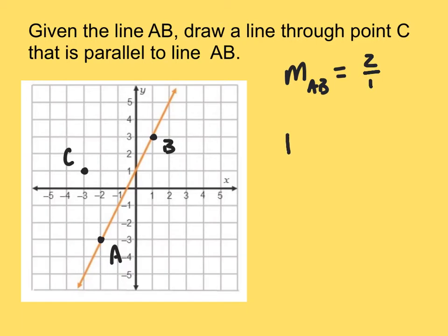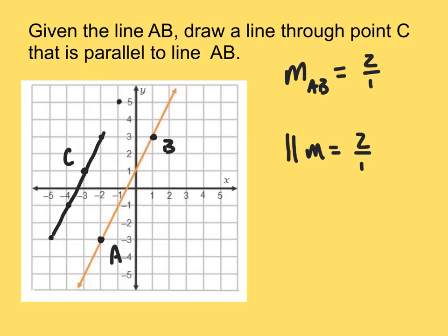If we're trying to find a parallel slope, we simply rewrite what we had: two over one. Then we can use point C to draw that line. I'm going to use this slope of two over one and this point to generate more points and draw a line. I go up two over one, plot a point, go up two over one, plot another point, go down two to the left one, and plot a point. And we have a line that is parallel to this line because they have the same slope.